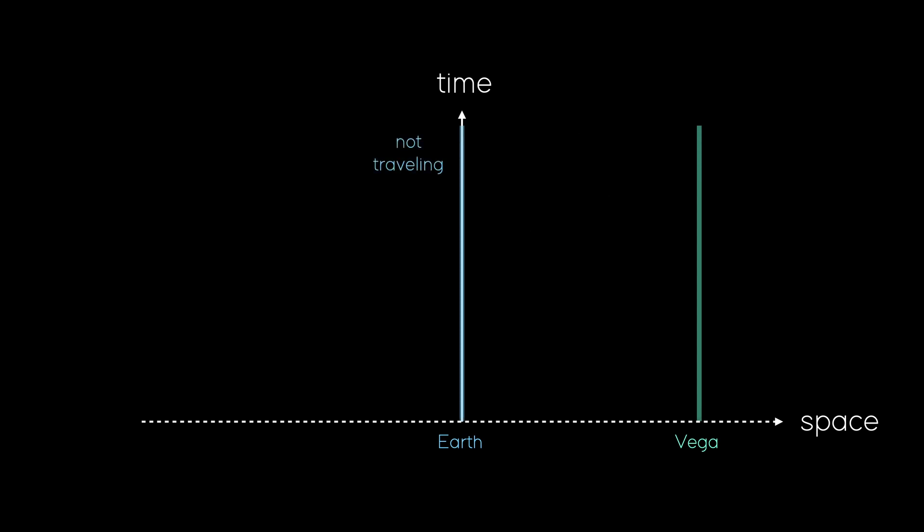So, such world lines correspond to no travel through space. In contrast, instantaneous travel, which is the most extreme FTL possible, would go from the Earth to Vega, with no time passing at all. Thus, it would appear as this pink line parallel to the space axis. Between those two extremes, we have traveling at the speed of light, given by this yellow line.